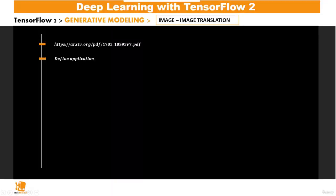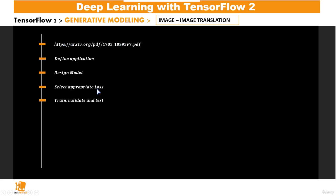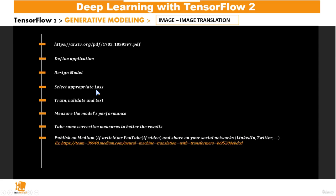You will define an application of image-to-image translation, design a model practically based on the model presented in this paper, select appropriate losses, train, validate, and test, measure the model's performance, take some corrective measures, and finally publish on Medium or YouTube and share on your social networks.